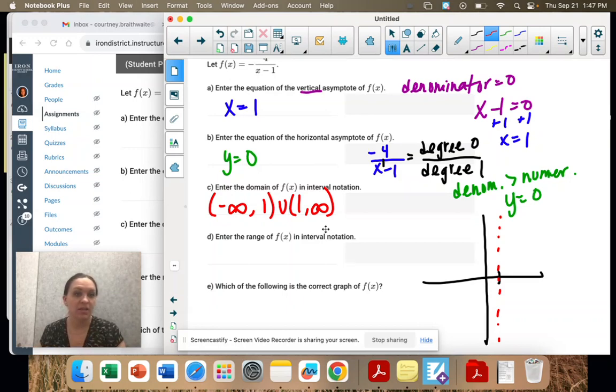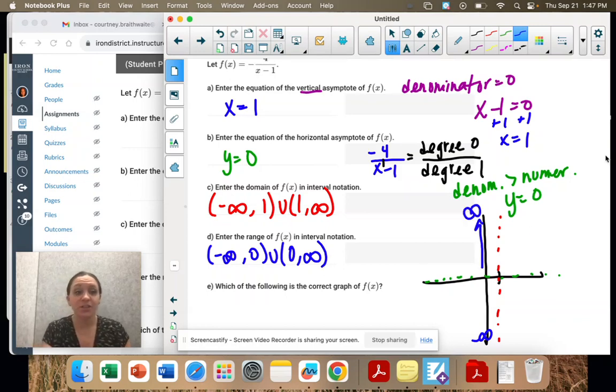And then it goes infinity and negative infinity. My horizontal is y equals 0. So I know I'm going to start down at negative infinity. My y values break at 0 and then continue up to positive infinity. But it's good to know what the graph looks like. So we're going to graph it.